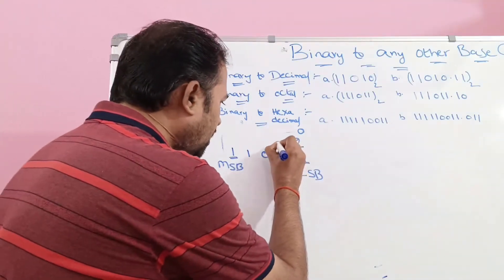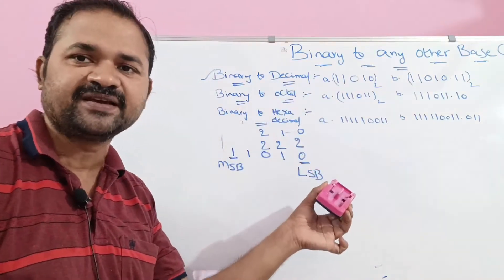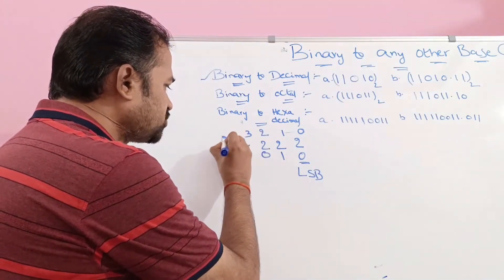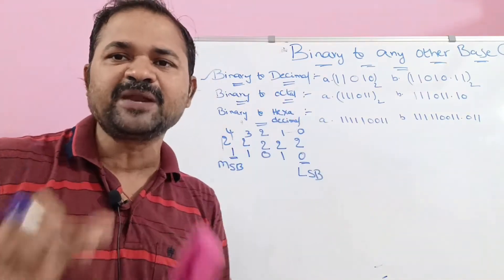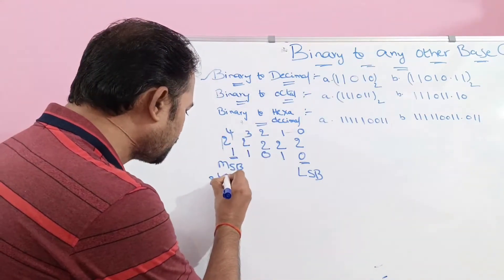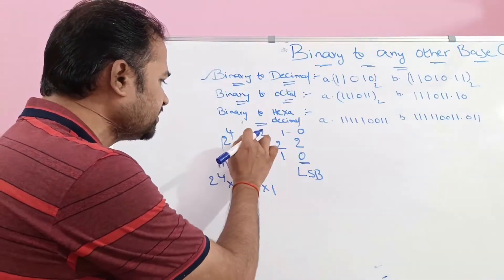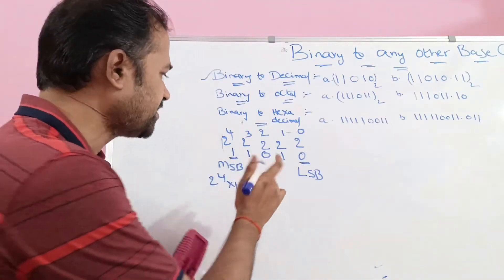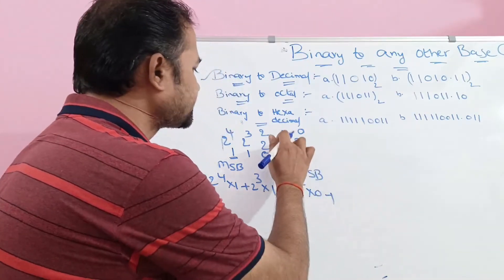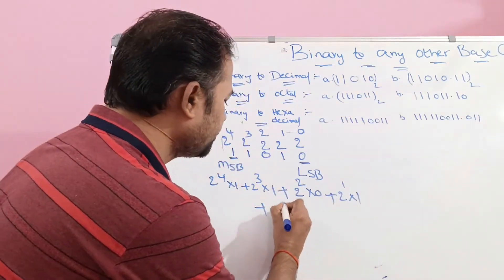Moving from LSB toward MSB: the next bit gets 2 power 1, then 2 power 2, 2 power 3, and 2 power 4. We then multiply each bit by its corresponding power of 2 and add the results: 2⁴×1 + 2³×1 + 2²×0 + 2¹×1 + 2⁰×0.